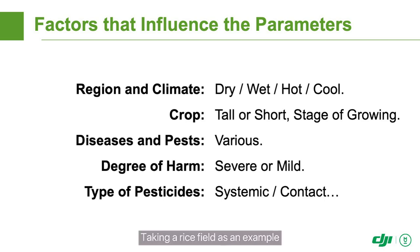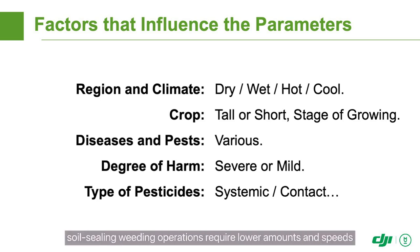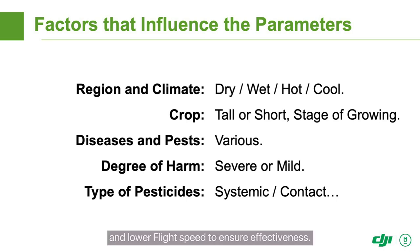Taking a rice field as an example, soil sealing weeding operations require lower amounts and speeds, while stem and leaf application weeding requires a higher spraying amount and lower flight speed to ensure effectiveness.